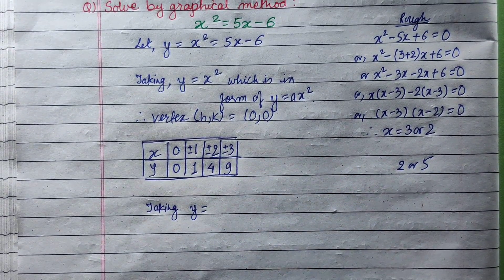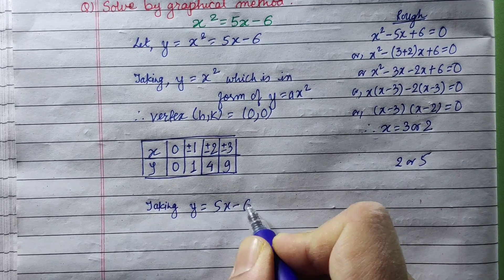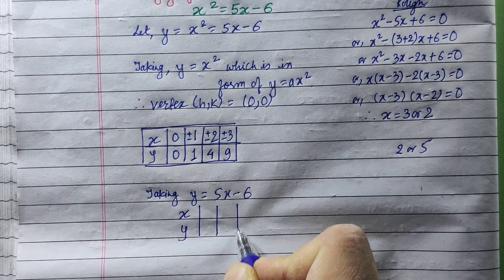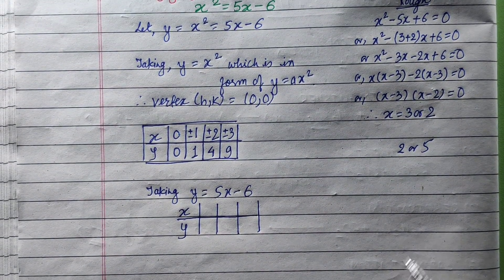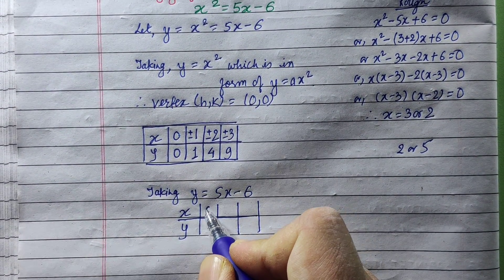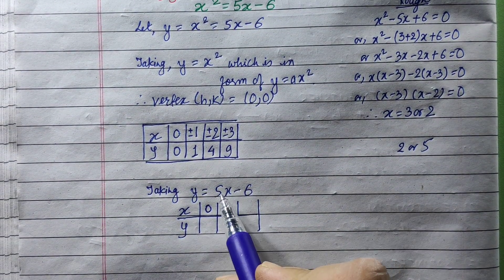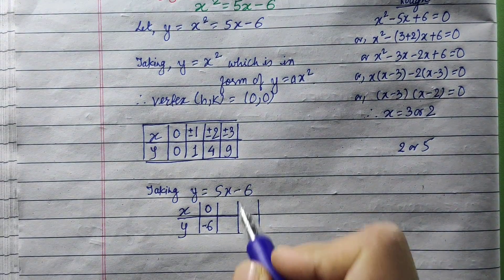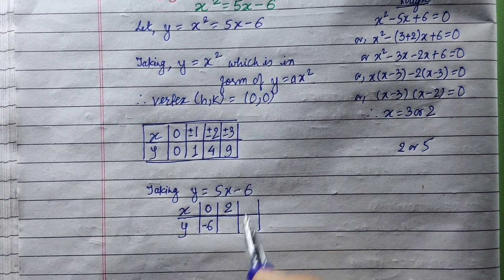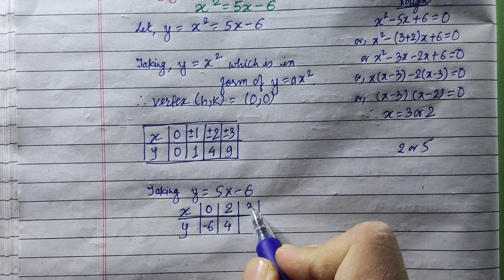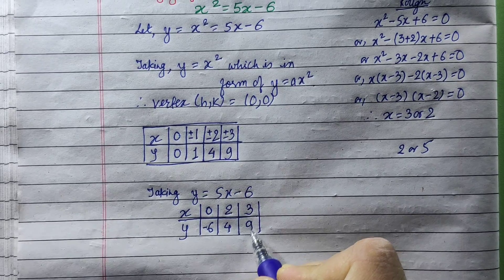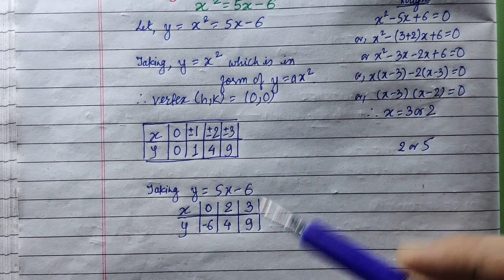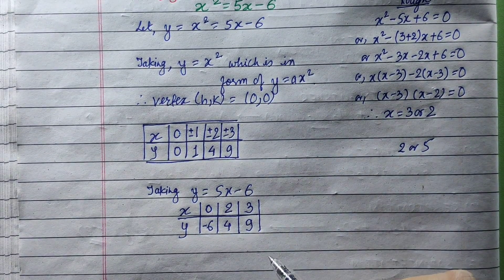Then y is equal to 5x minus 6. Now we have a straight line, so we make a 3-column box. The observation for x equals 0 is 5 times 0 minus 6. We get points: 2, 4, 3, and 9. In the graphical method, we will go to the graph.